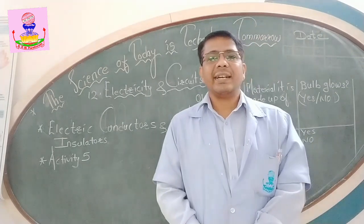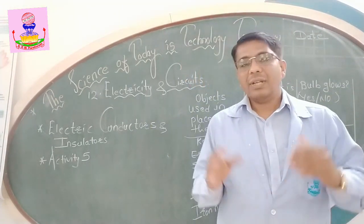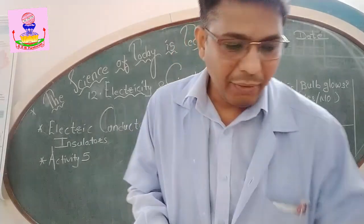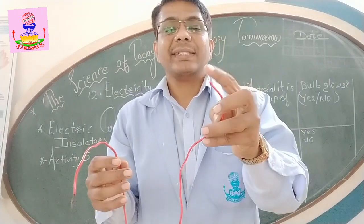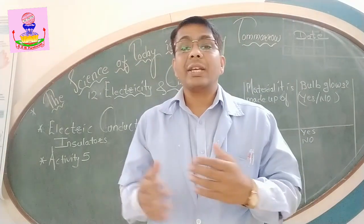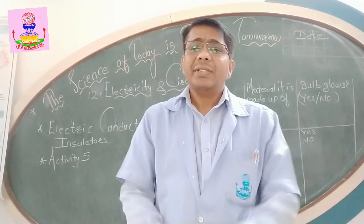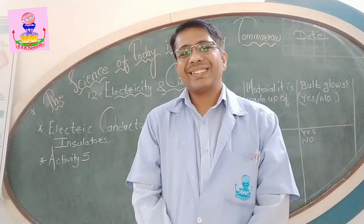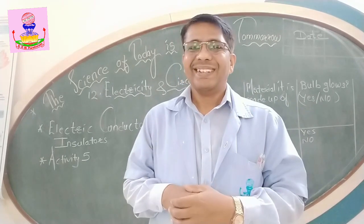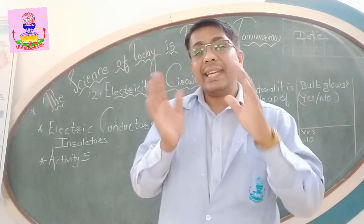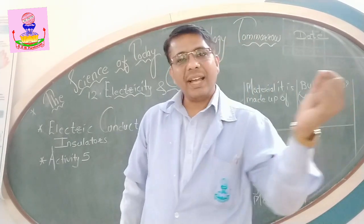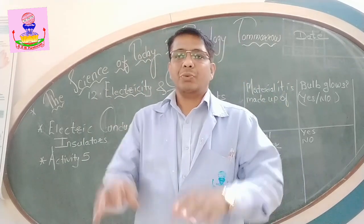Now the next part of our topic: electric conductors and insulators. Last time we used conducting wires made up of metals — copper and aluminium. Just imagine if I used a thread to make the circuit — would current flow through it? No, it is not possible. You need metal wires only. So we can classify substances into two types: those through which current can flow easily, and those through which current does not flow at all.